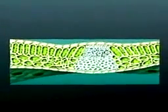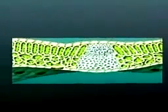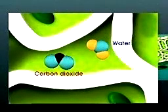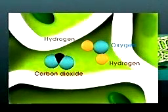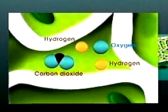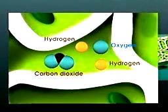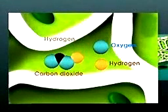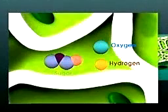Partly surrounding each cell of the palisade and spongy tissues is an airspace filled with carbon dioxide, water vapor and other gases. The energy absorbed by the chlorophyll splits the water molecules in these spaces into molecules of hydrogen and oxygen. The hydrogen then combines with carbon dioxide to produce a simple sugar.